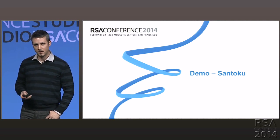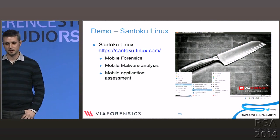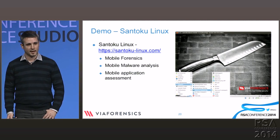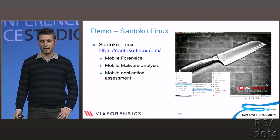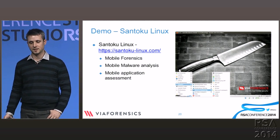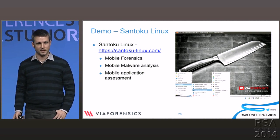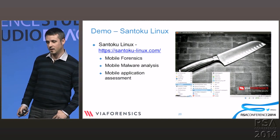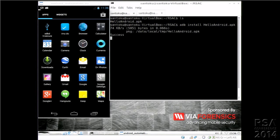I will now show you a quick demo using Santoku Linux. You can download it at santoku-linux.com. It's a Linux distribution with a lot of open source tools pre-installed and ready to use. It has tools for mobile forensics, malware analysis, and mobile application assessment — so it covers pretty much anything. In the demo, on the left side we can see the Android phone. I'm using a Hello World application just for demo purposes.